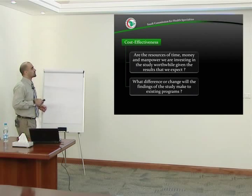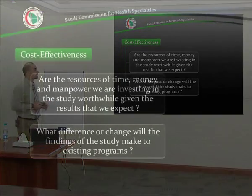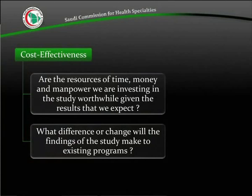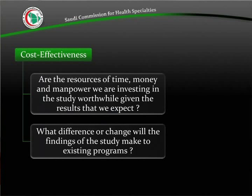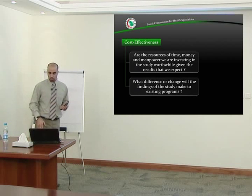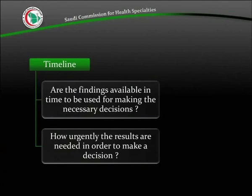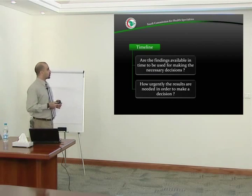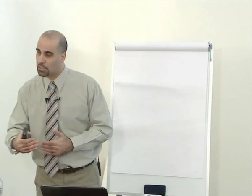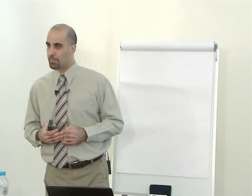Cost-effectiveness — are the resources in terms of time, money, and manpower that you are going to invest in the study worthwhile given the results you expect? With all the money and time you invest, do you expect the results will be worth it? If not, you might consider changing the research question. What difference or change will the findings make to existing programs or interventions? Timeline — are the findings available in time to be used for making the necessary decisions? How urgently are the results needed? Sometimes we have epidemic outbreaks, like the E. coli outbreak in Europe, and you have to make sure the results will be available in a short period of time so that change will be implemented.